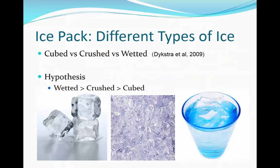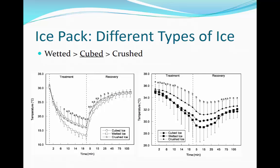There have been some studies examining the differences between cubed, crushed, and wetted ice. One great study was done by Dijkstra and colleagues in 2009. The hypothesis was that the wetted ice would be the coldest, followed by the crushed and then the cubed. The results demonstrated that the wetted ice was indeed the coldest, but the cubed ice was second and then finally the crushed ice over a period of 20 minutes.